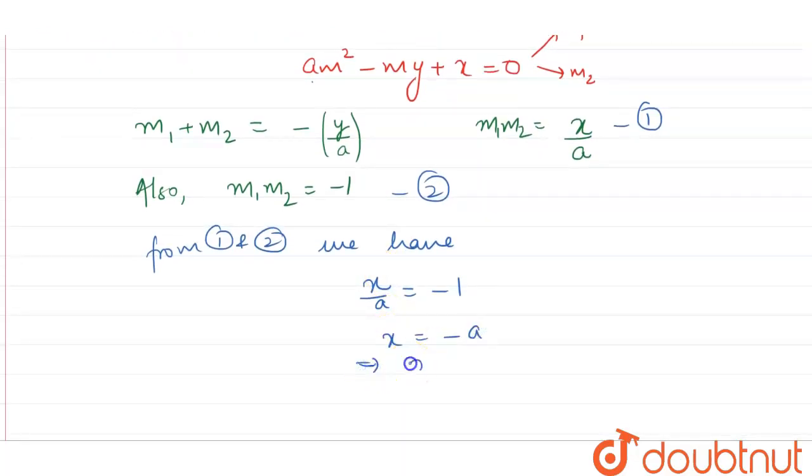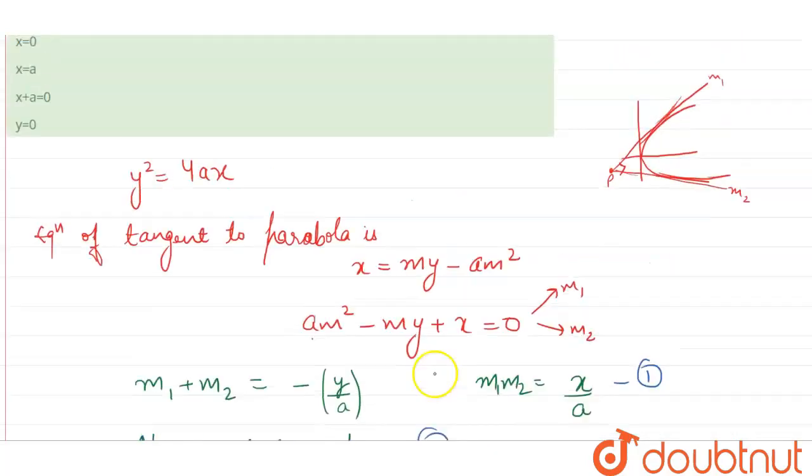This implies x plus a is equals to 0, so it is locus of points of tangents which are perpendicular to parabola. So our third option is correct option, thank you.